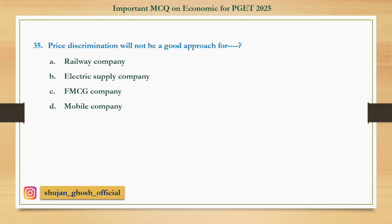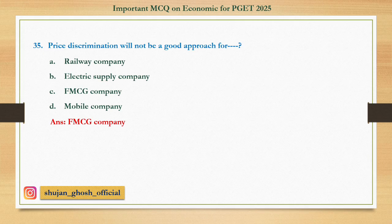Question number thirty-five: Price discrimination will not be a good approach for — option A: railway company; B: electricity supply company; C: FMCG company; D: mobile company. Answer: FMCG company. In this case, price discrimination will not be a good approach.